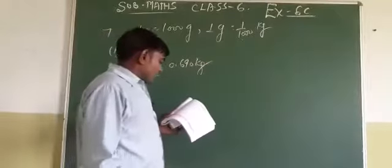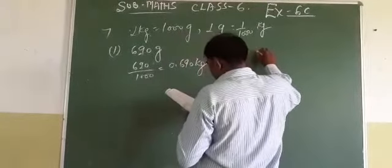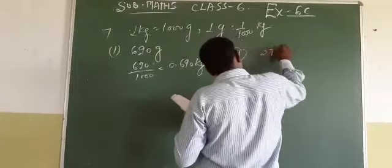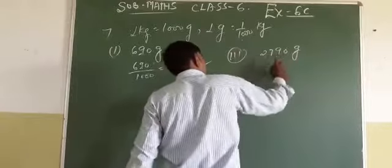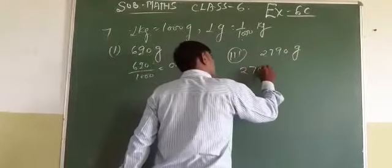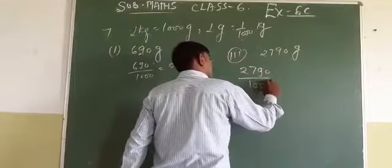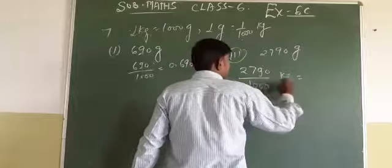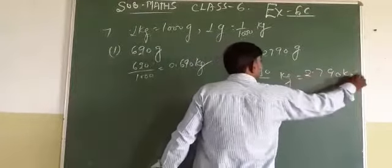Now let us do the third part. The third part is 2790 gram. So dividing 2790 gram by 1000 to convert to kilogram gives us 2.790 kilogram.